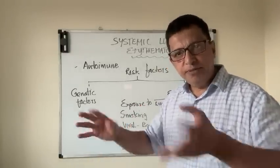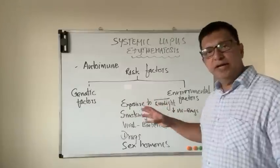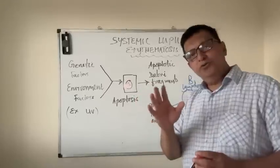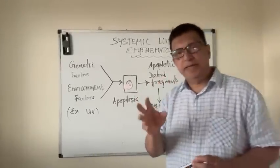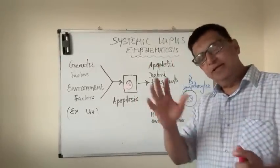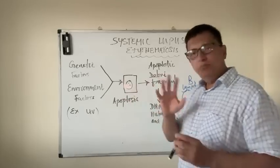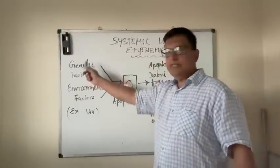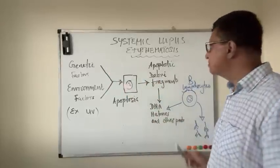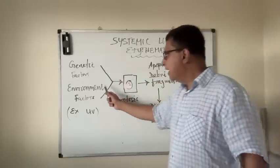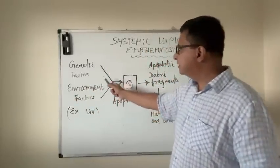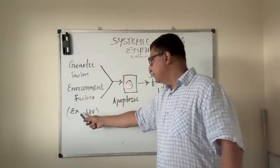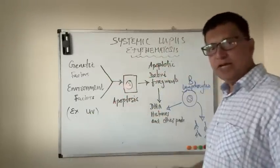We will now briefly discuss the mechanism of systemic lupus erythematosus. I'm going to explain the immune mechanism in very simple words — it's a complicated process but I will make it as simple as possible. When somebody has the genetic factor predisposing to SLE and they get exposed to environmental factors, for example ultraviolet light from sun rays...